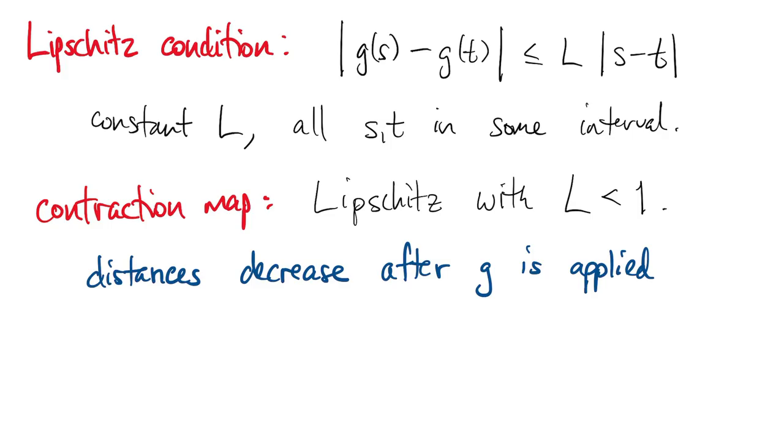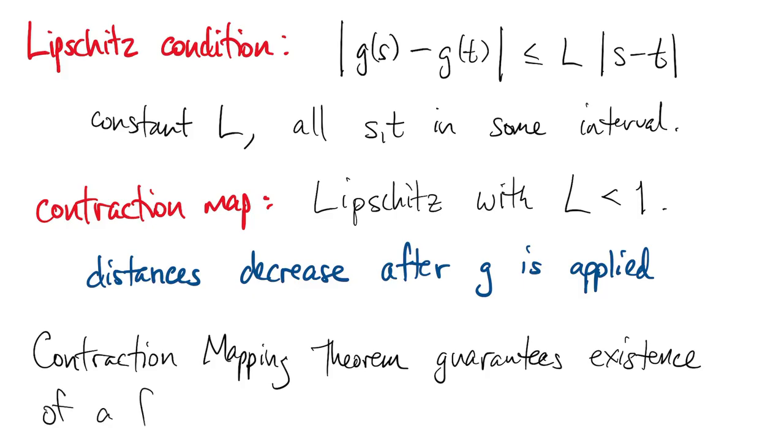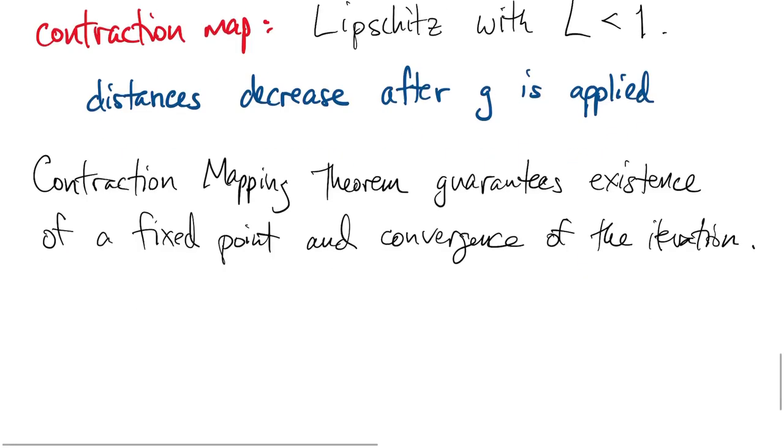It turns out there's a very famous theorem known as the contraction mapping theorem, which can guarantee that a fixed point exists and that the iteration will converge to it. It's a quite general theorem. It applies in higher dimensions and even in abstract vector spaces.